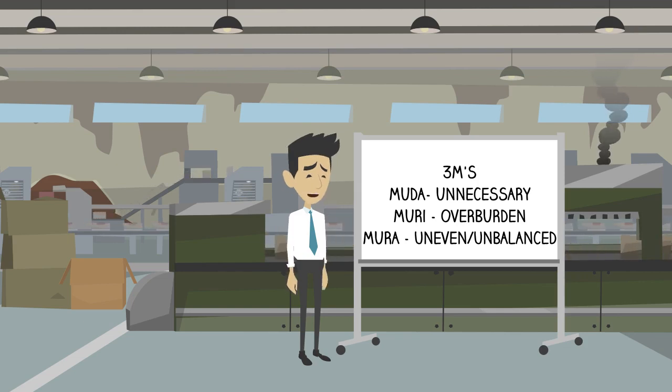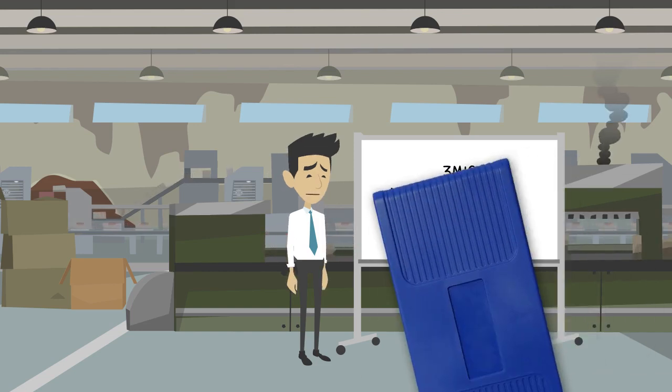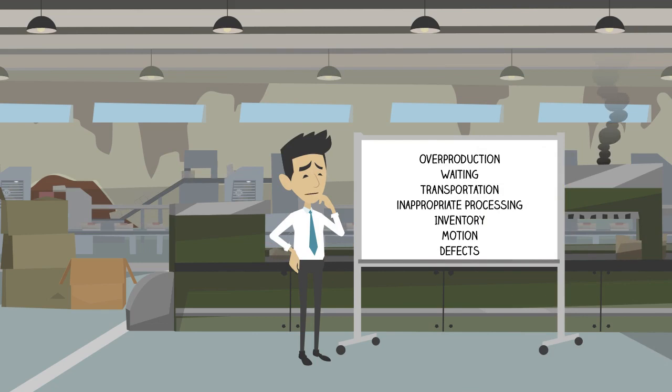Muri means to overburden. When people or machines are utilized for more than 100% to finish their task, they are overburdened. This creates productivity and quality problems in addition to major employee dissatisfaction. Concepts such as standard work, line balancing, total productive maintenance, and several other tools and concepts can be used to address Muri.